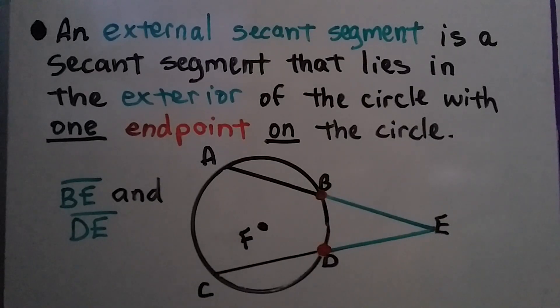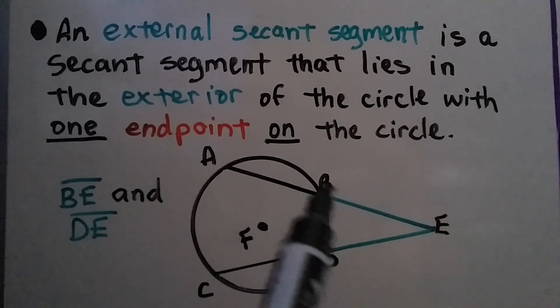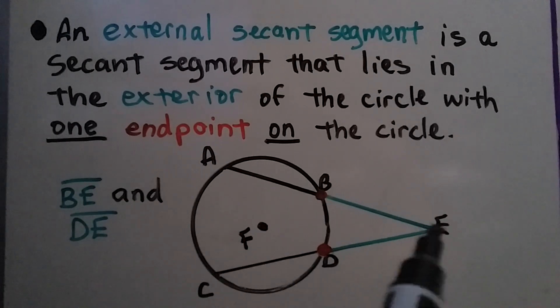An external secant segment is a secant segment that lies in the exterior of the circle, with one endpoint on the circle. We have external secant segments that are segment BE and segment DE.